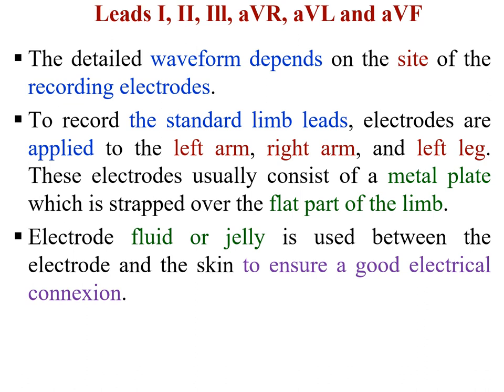To obtain the ECG trace or records, we use two sets of leads. The first is called the standard limb leads, and the second is called the chest leads. The standard limb leads allow us to obtain Lead 1, Lead 2, Lead 3, AVR, AVL, and AVF. The detailed waveform depends on the side of the recording electrodes.